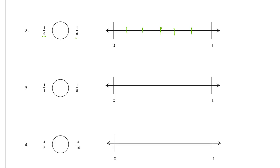Now we need four sixths and one sixth. This would be zero sixths, so here's one sixth. And four sixths means counting one, two, three, four — there's the fourth sixth. Circle the one closest to zero, and four sixths is greater than one sixth.